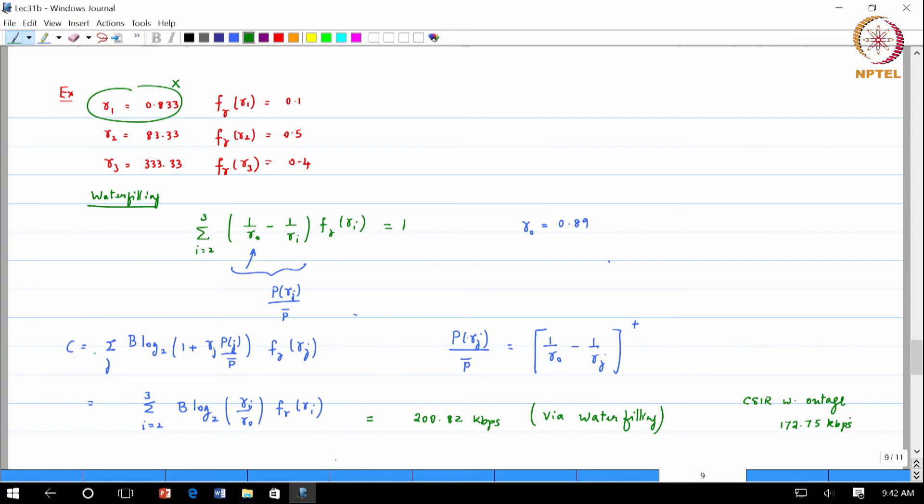So because it is a sort of a constructed example we know maybe the gain is not that dramatic. But usually what we find is that water filling is a very, very good strategy. It actually causes a significant advantage. The other advantage is you did not waste time transmitting power when the channel condition was bad whereas in the case of the CSIR you actually did end up transmitting power during time when the channel conditions were not so good as well.